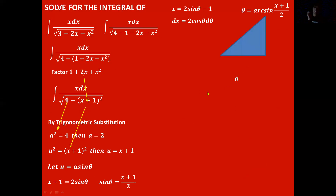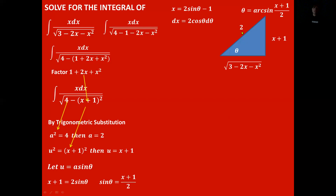We now draw a right triangle with theta labeled so we can identify the opposite, hypotenuse, and adjacent sides. Since sin theta equals opposite over hypotenuse, the opposite is x plus 1 and the hypotenuse is 2. Using the Pythagorean theorem, the adjacent side equals the square root of 3 minus 2x minus x squared.